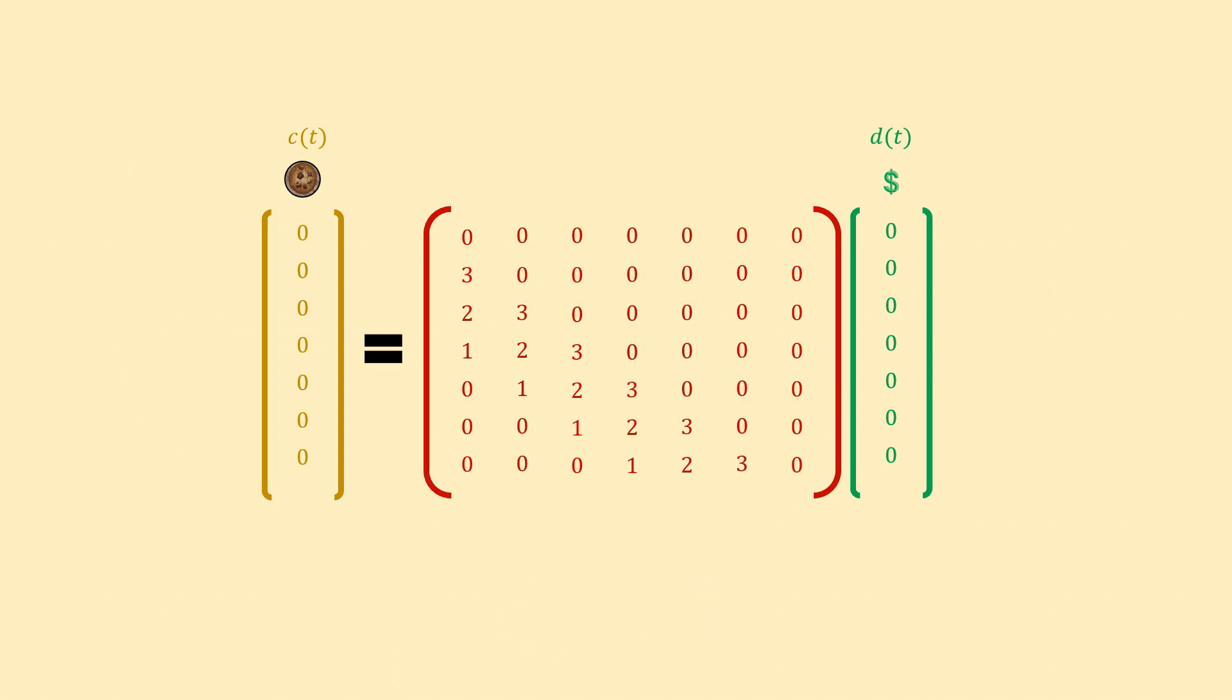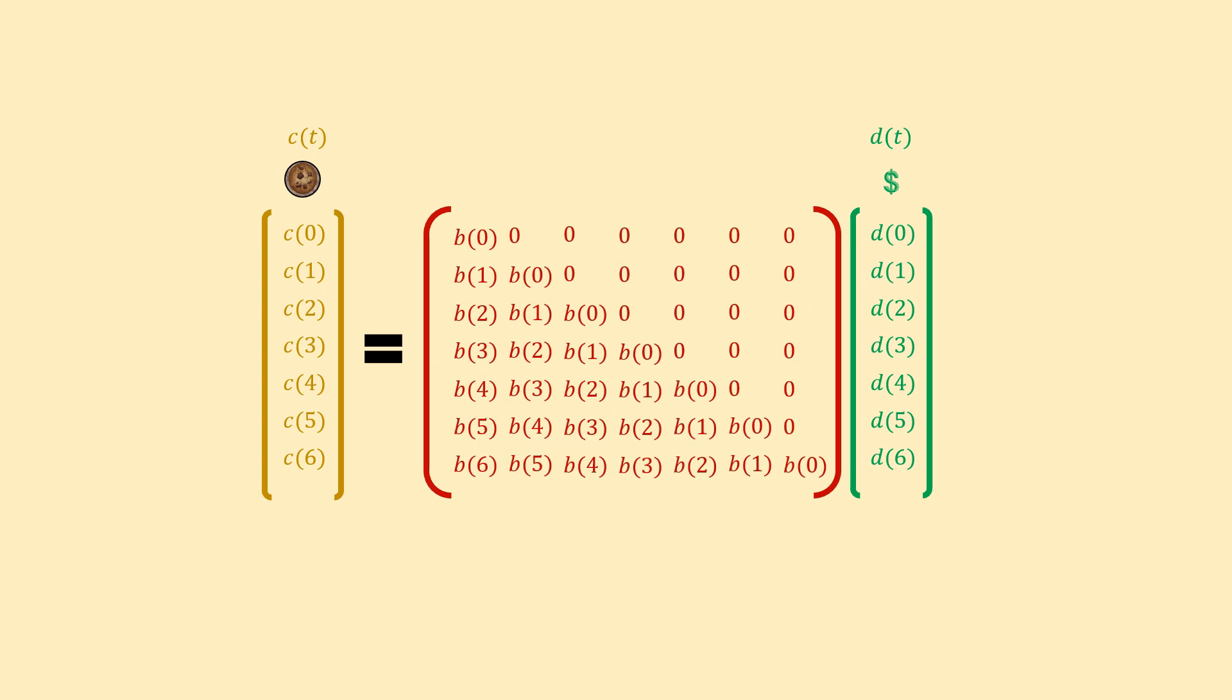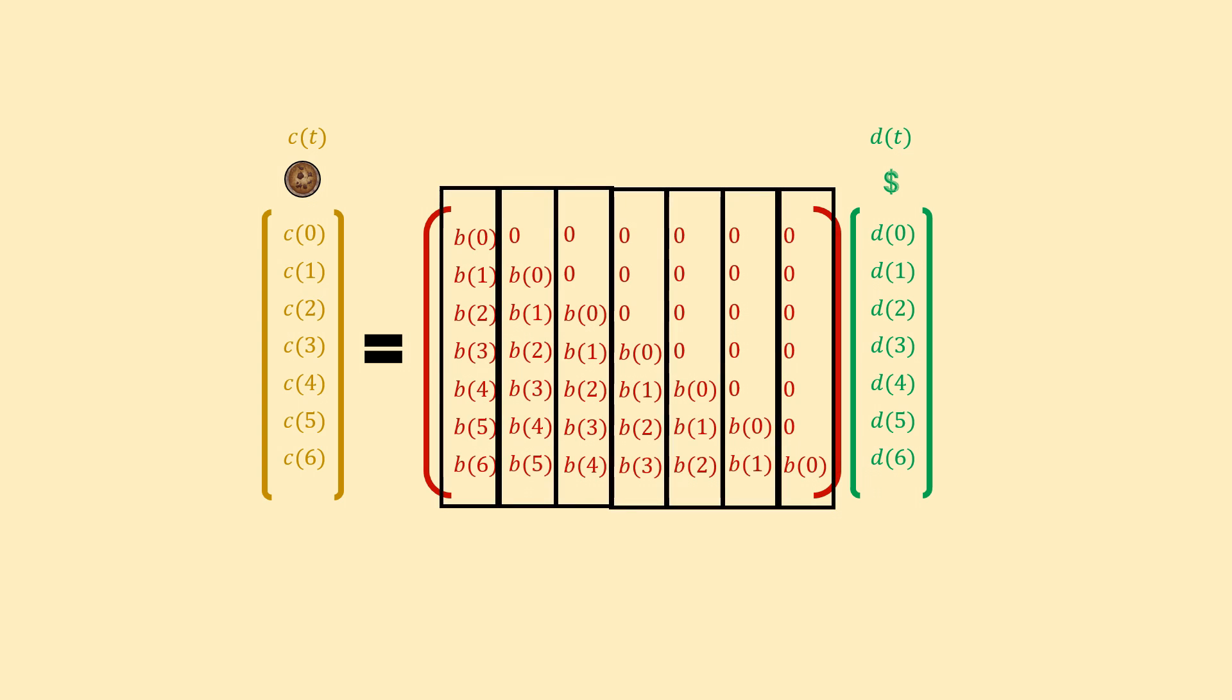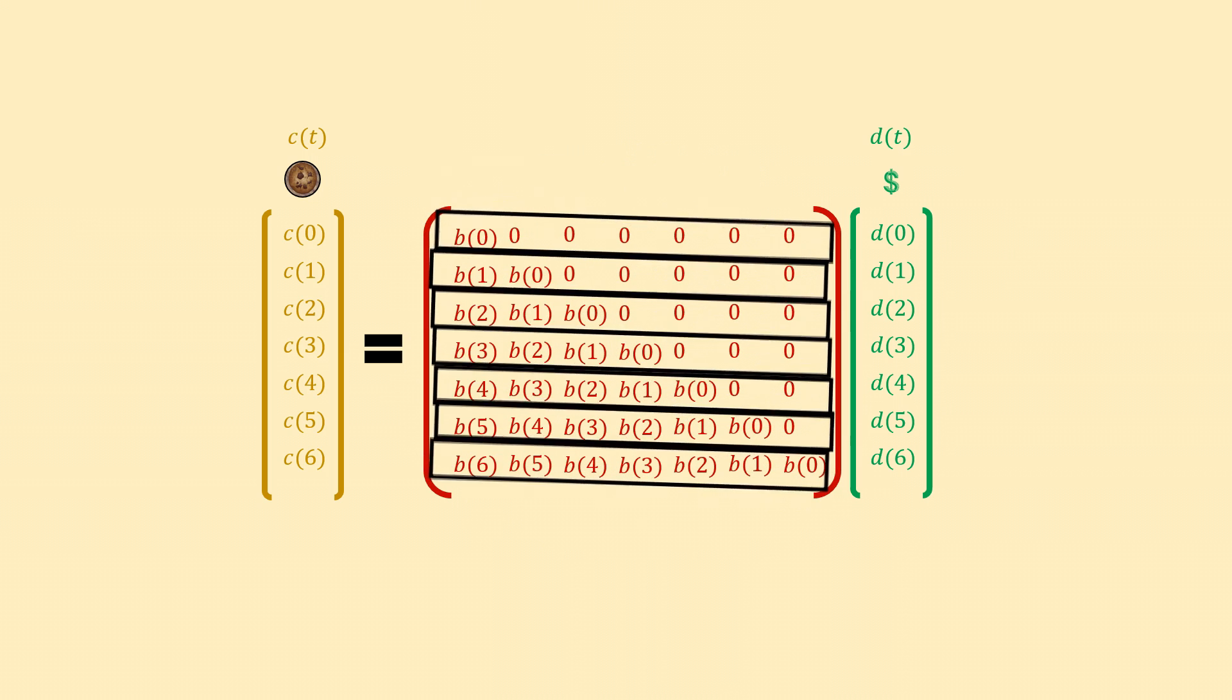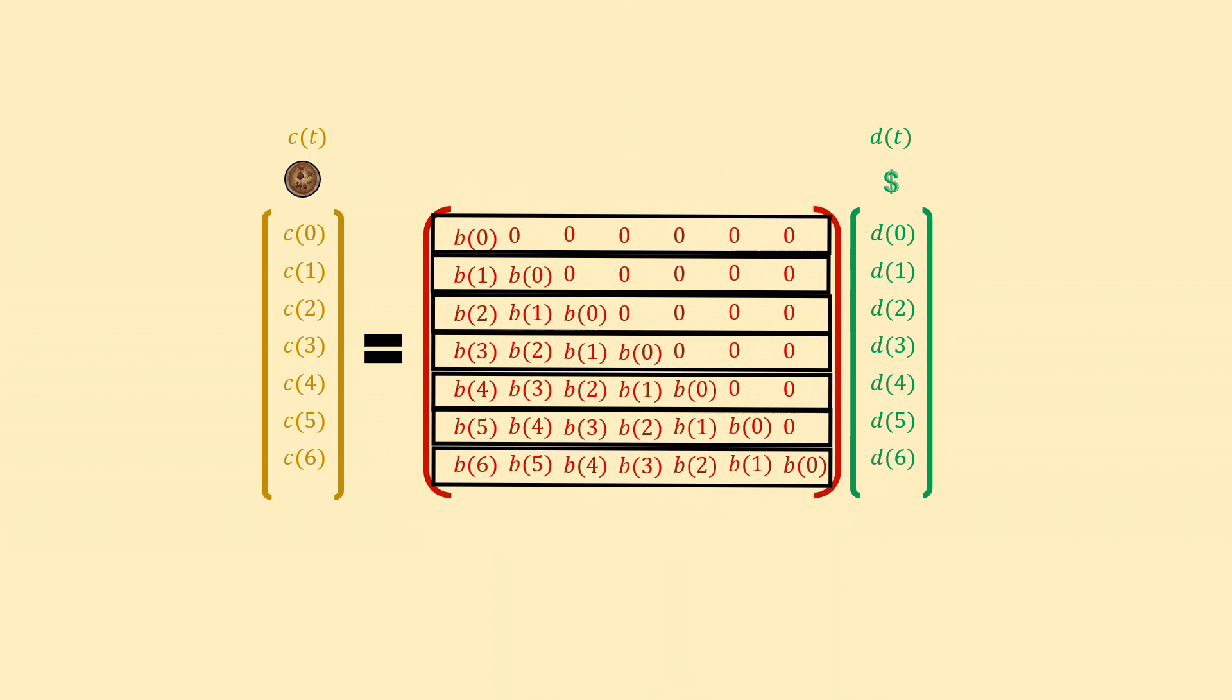Now that we have an idea of what the matrix looks like, we can generalize this expression. So that for any sequence of dollars we give to any bakery, we can predict the sequence of cookies we receive. Generalizing the input is rather simple, and so is generalizing the impulse response matrix. Since the elements of the output vector is a sequence of dot products between the input and the matrix rows, we can express the output vector like this.